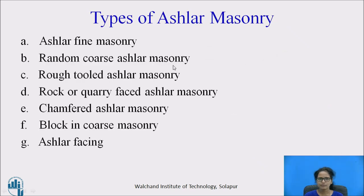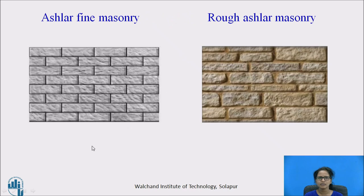Next we have the types of ashlar masonry: ashlar fine masonry, random coursed ashlar masonry, rough tooled ashlar masonry, rock or quarry faced ashlar masonry, chamfered ashlar masonry, block-in-course masonry, and ashlar facing. Some of these types will be discussed further.